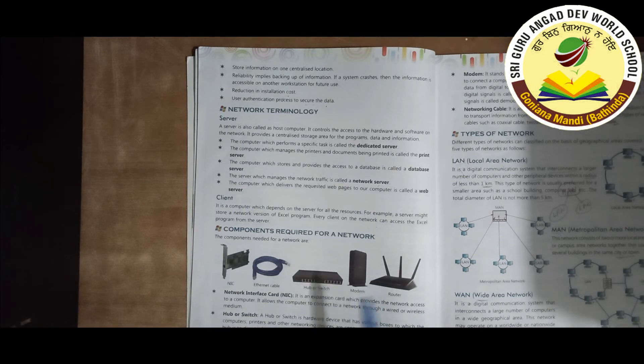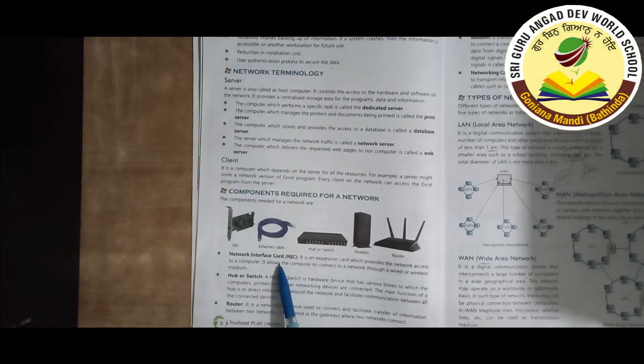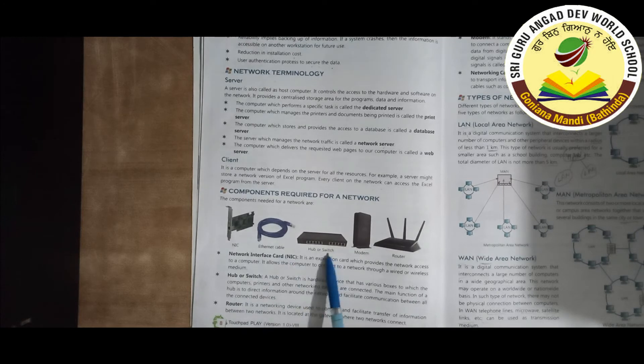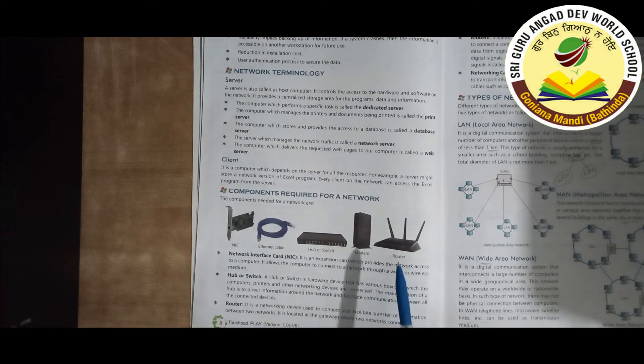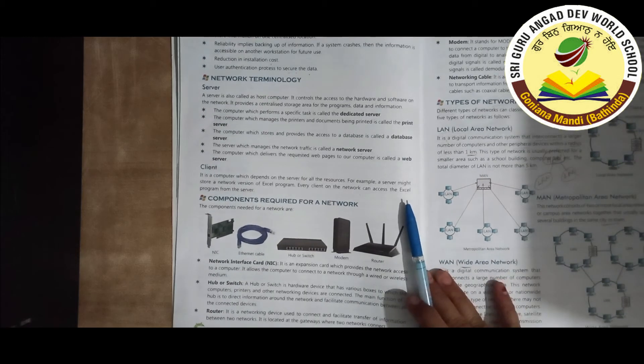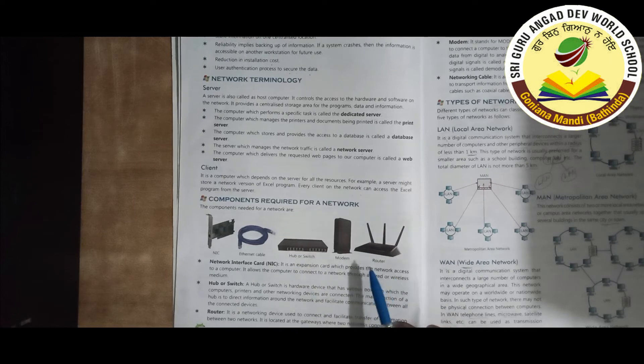Now components for a network: Network Interface Card, Ethernet cable, Hub or Switch, Modem, and Router. These are the components that are used for computer networking.